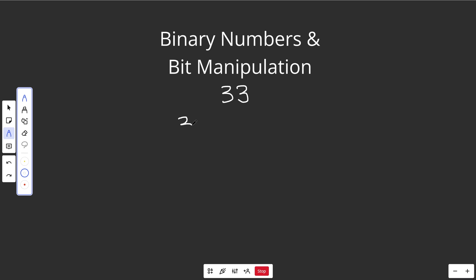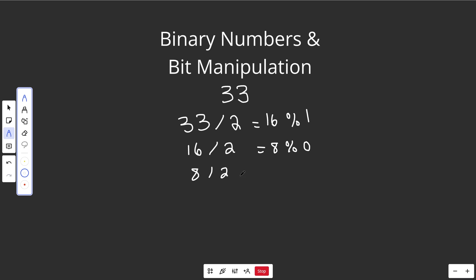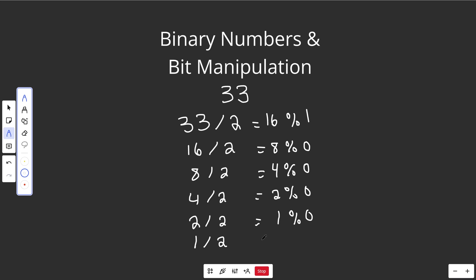What you do is basically just keep dividing by 2 and record remainders. You get 33, divide it by 2, and you're going to get 16 with a remainder of 1. Take 16 and divide by 2 — you get an even 8 with a remainder of 0. Then 8 divided by 2 gives you 4 with a remainder of 0. Then 4 divided by 2 gives you 2 with a remainder of 0. Then 2 divided by 2 gives you 1 with a remainder of 0. And finally, 1 divided by 2 is 0 with a remainder of 1.